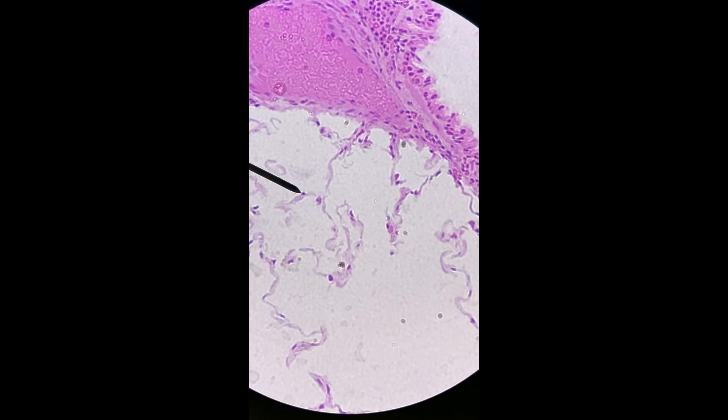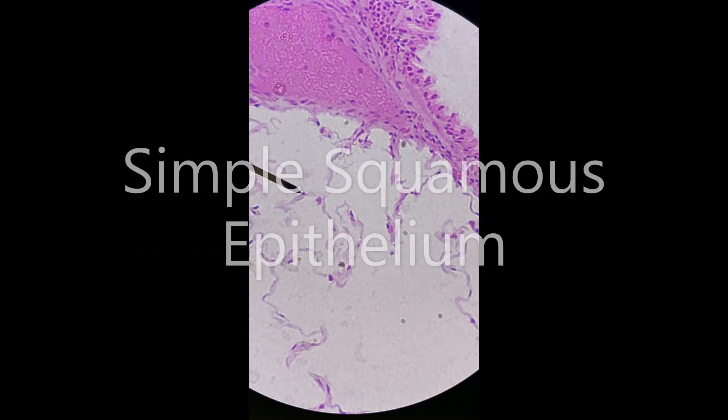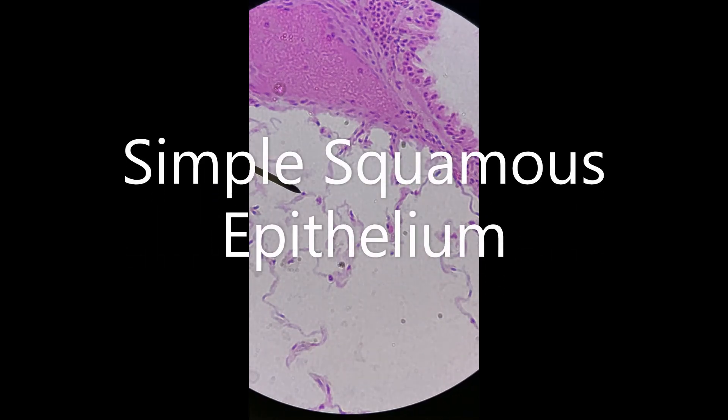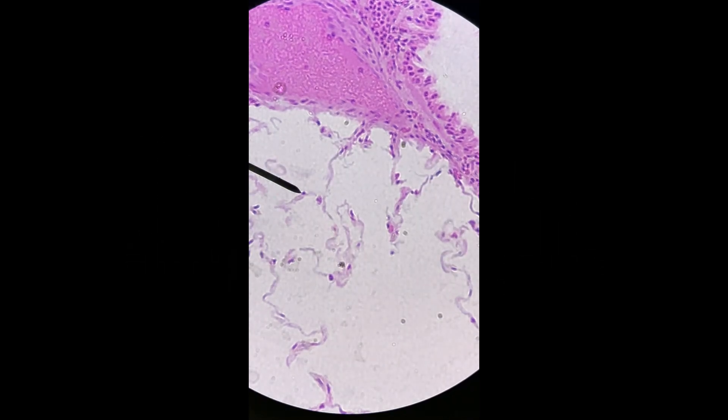This is a slide of a section of the lung. You can see it's at the highest power, so 400 times. The pointer right there is on one of the simple squamous epithelial cells that make up the majority of the inside of the lung.